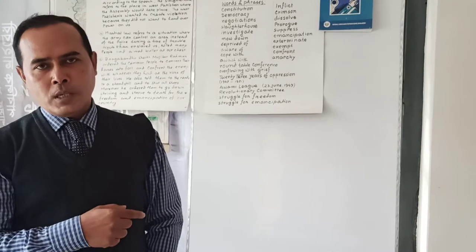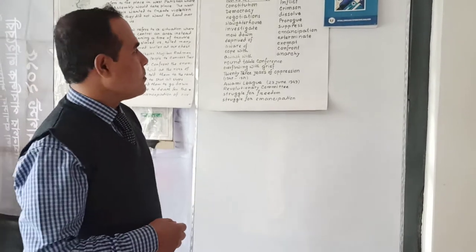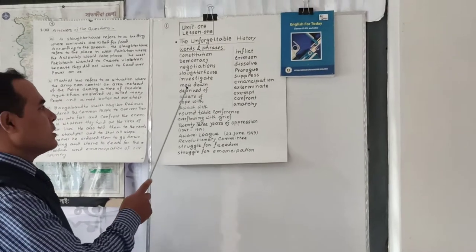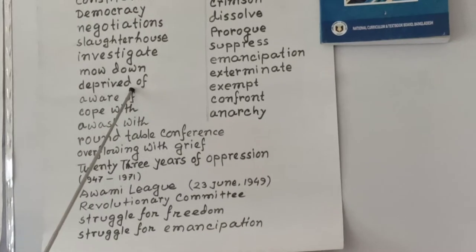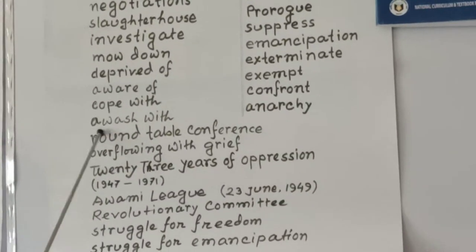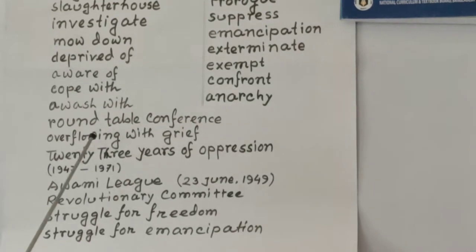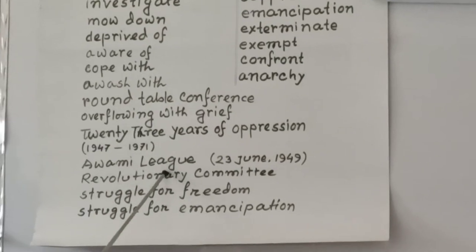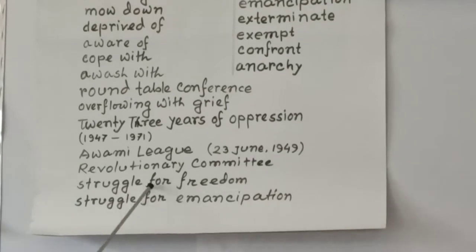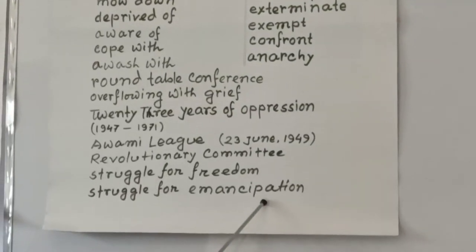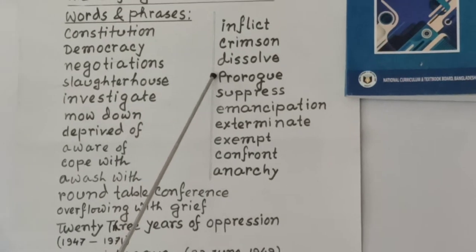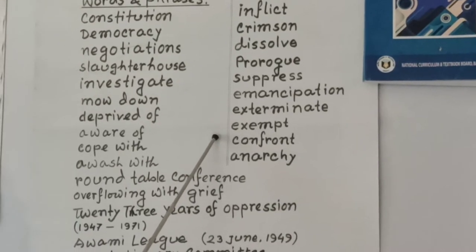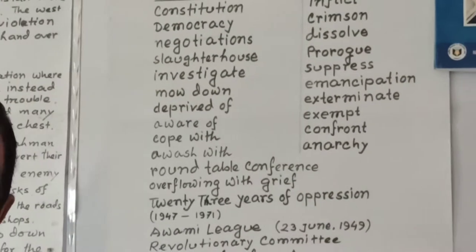I want to repeat the key words and phrases: Constitution, Democracy, Negotiations, Slaughterhouse, Investigate, Mow-down, Deprived of, Devoid of, Cope with, Awash with, Roundtable Conference, Overflowing with Grief, 23 years of operation, Awami League, Revolutionary Committee, Struggle for Freedom, Struggle for Emancipation, Inflict, Crimson, Dissolve, Prologue, Suppress, Emancipation, Exterminate, Exempt, Confront, Anarchy.